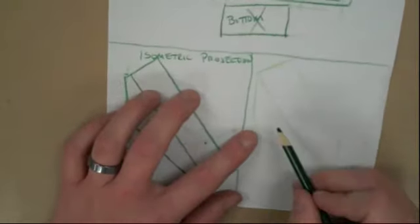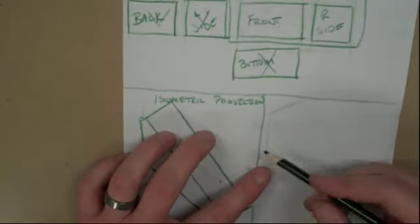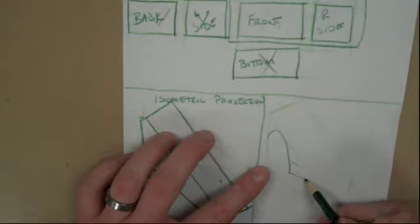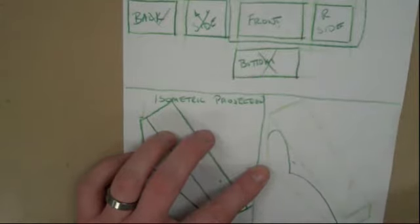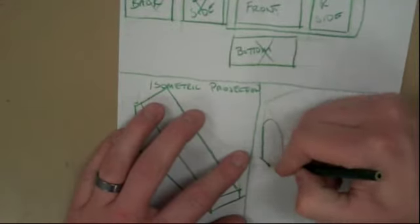Now, what I want to do is take my front view and transfer it on here. So, I'm going to have a car that kind of looks like that for right now. We can darken in the bottom lines now.